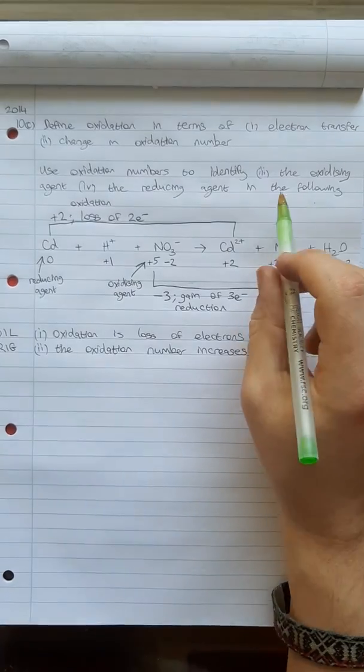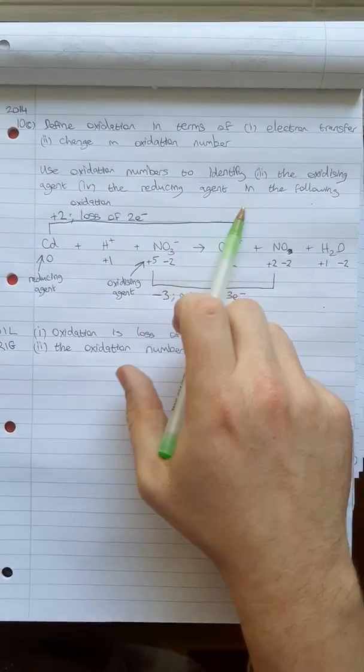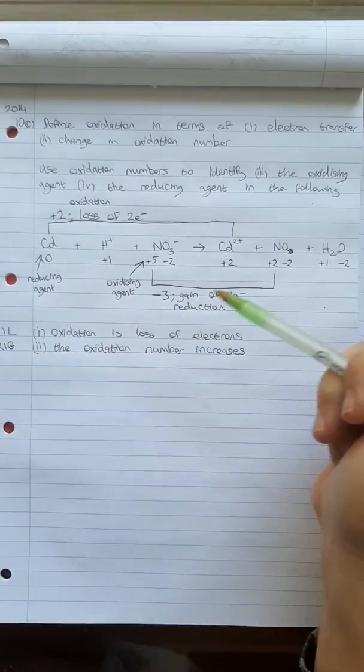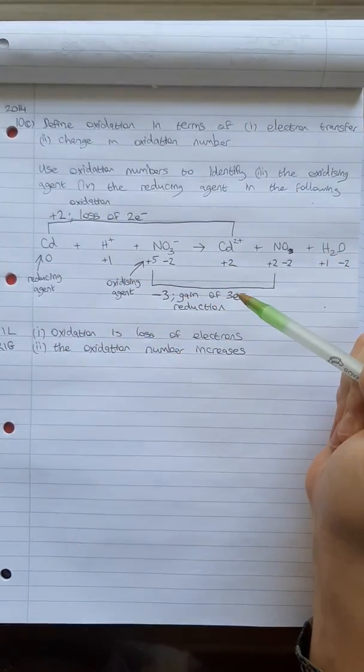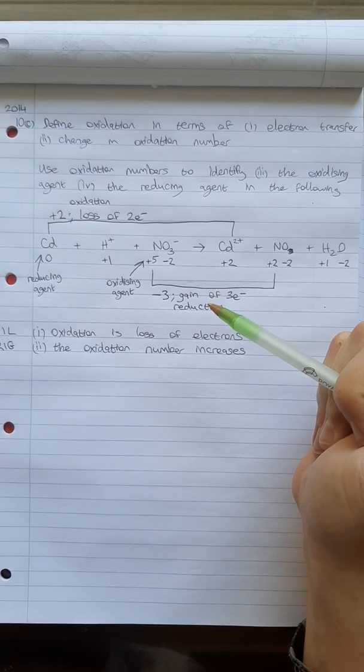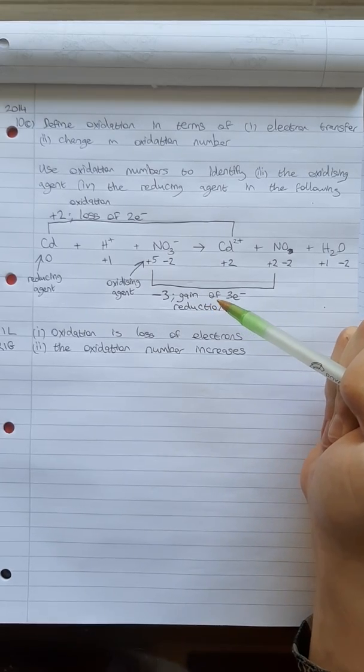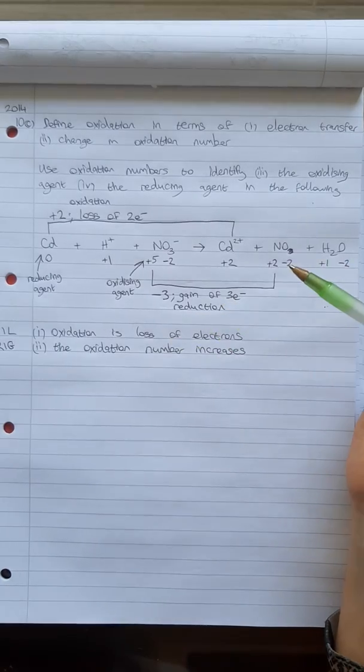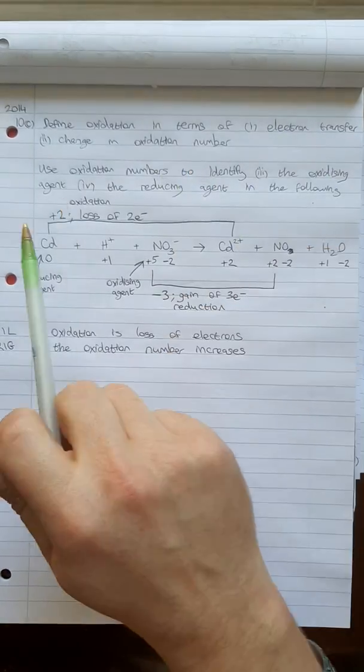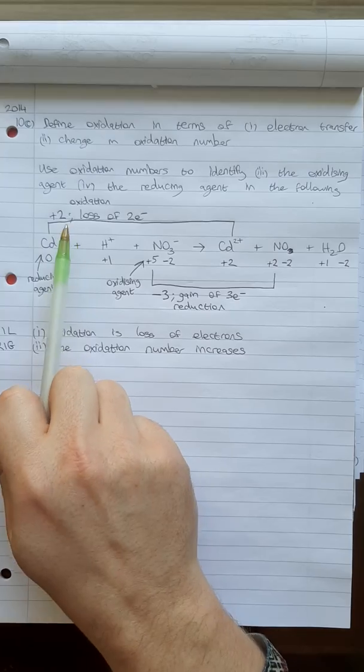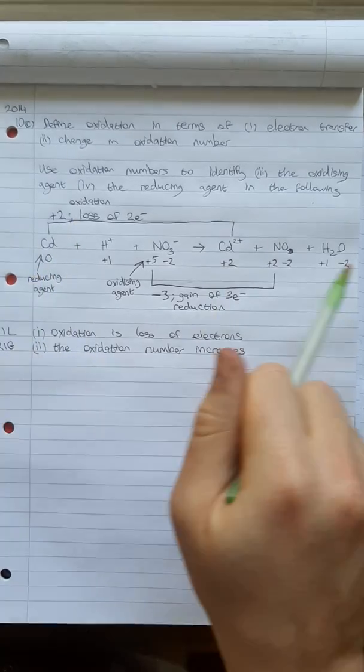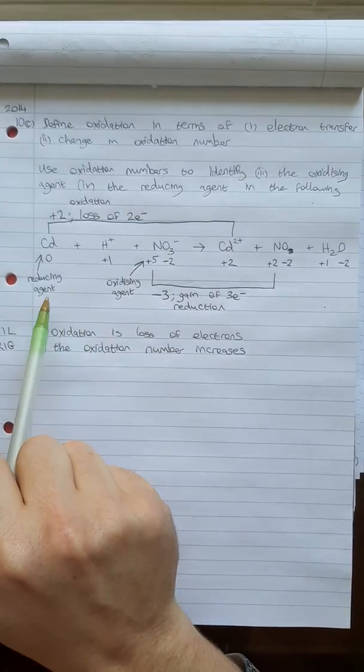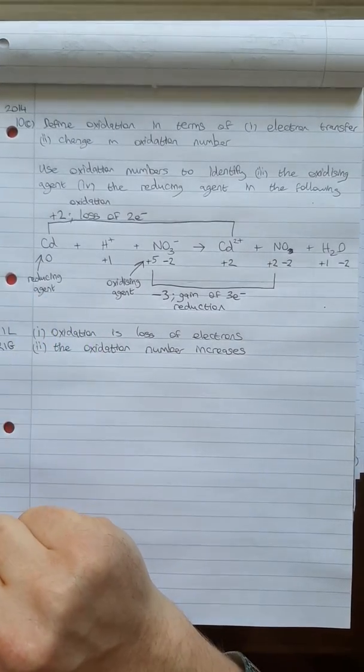And that answers the next part there, part three and part four, identifying the oxidizing agent and the reducing agent in this equation. The last thing that needs to be done, and there's usually about seven marks for this kind of question, is balancing the equation using the oxidation numbers again. So we've already done most of the work. We've already found out the oxidation numbers of everything. We found out which ones are losing, which ones are gaining, which ones are reducing agents, which ones are the oxidizing agents.